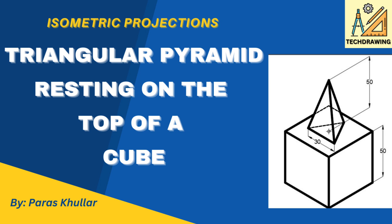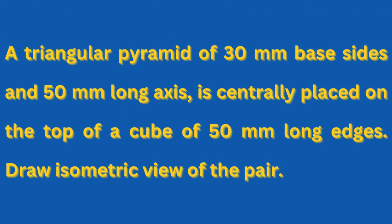Hello students, in this video we will study the topic of isometric projection and we will draw a case of combination of two solids. A triangular pyramid of 30mm base sides and 50mm long axis is centrally placed on the top of a cube of 50mm long edges. Draw the isometric view of the pair.